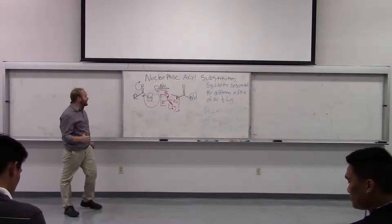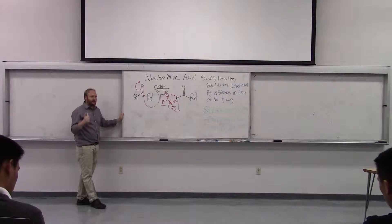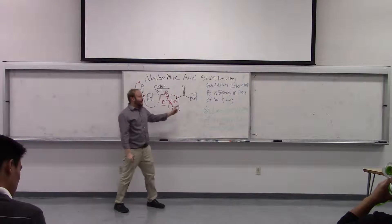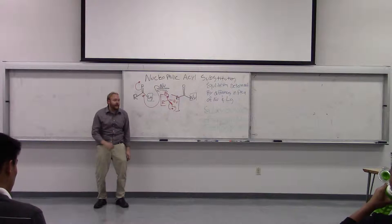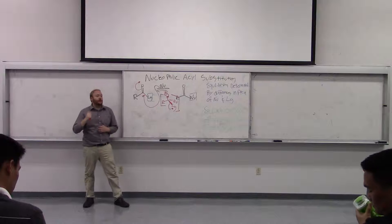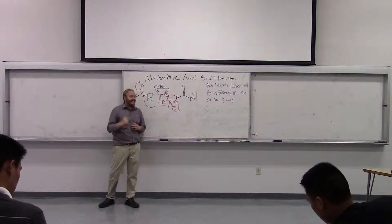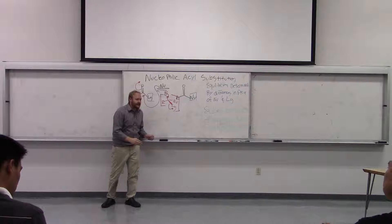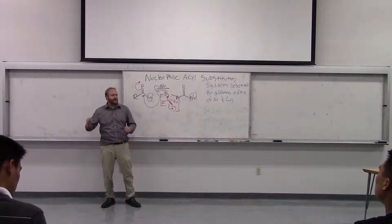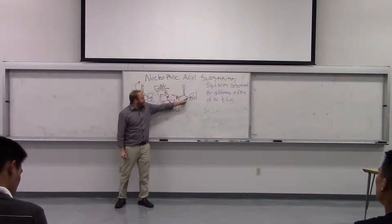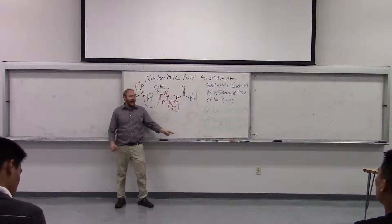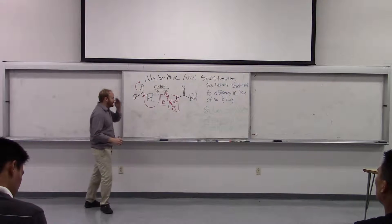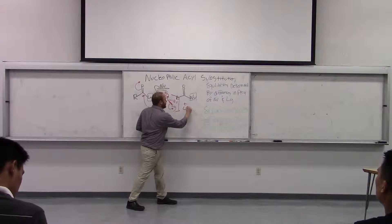The thing that determines the equilibrium, and this was a big sticking point on Friday, is the differences in PKA between the leaving group and the nucleophile. To give you a general rule with nucleophilic acyl substitution, the equilibrium is going to lie on the side of the stronger base, i.e. higher PKA of its conjugate acid, forming a bond to the carbonyl, and the weaker base, a.k.a. lower PKA of its conjugate acid, being the group that's kicked out.